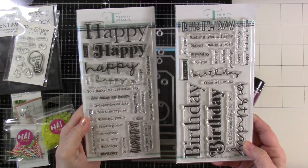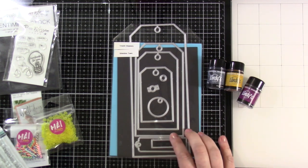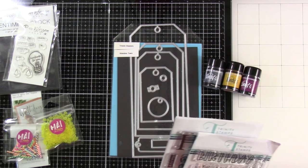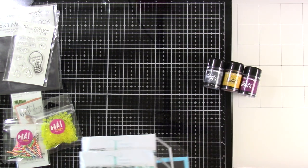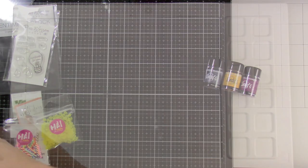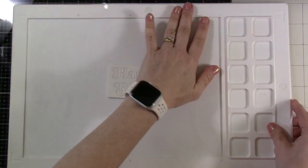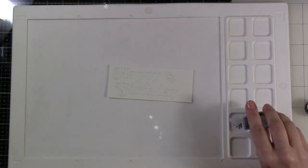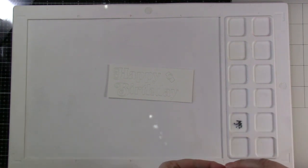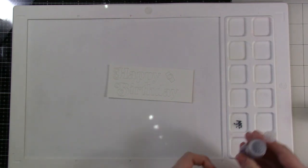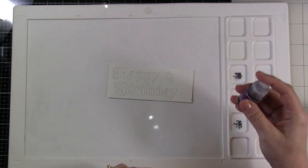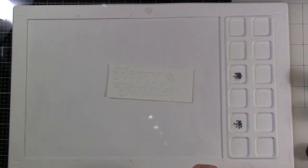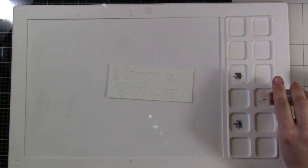We have our Trinity Stamps slimline tags along with some Lindy's Gang magical shakers. To save time, I die cut the words happy and birthday out of watercolor cardstock and stuck them back in place using mint tape. I'm using my Waffle Flower water mat and putting the Lindy's Gang colors into a couple of those wells, separating them out in case I get a little crazy with the water.